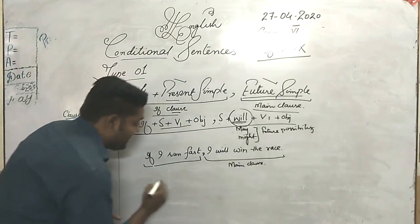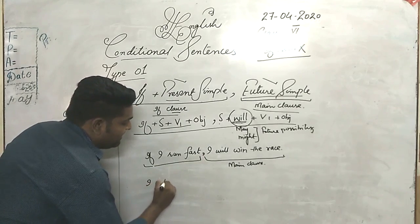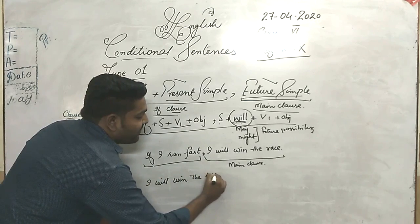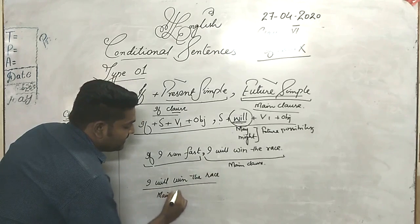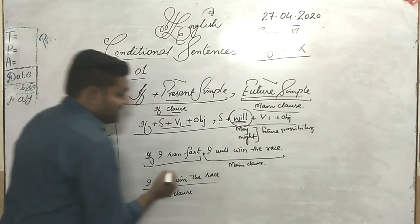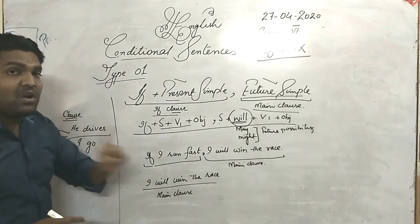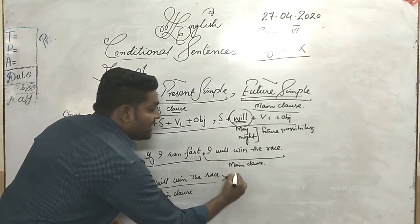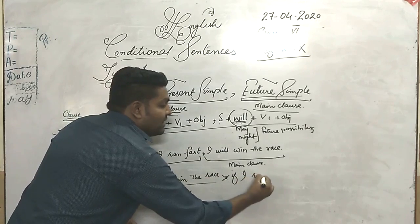It can also be vice versa. If I write the main clause first: 'I will win the race,' and then write the if clause after the main clause, we do not use a comma before 'if.' Directly write: 'I will win the race if I run fast.' When the main clause comes first, there is no comma.